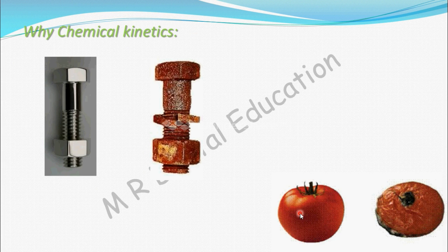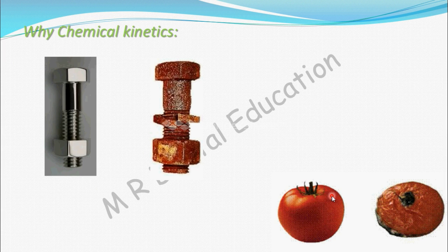See one more example: spoilage of tomato. By studying chemical kinetics, we come to know how much time it will take to spoil, at what rate it is getting spoiled, and how increasing the temperature raises the spoilage rate. We can also learn how to avoid this spoilage by keeping it in the refrigerator, that is, at low temperature. All these things can be understood by studying chemical kinetics.